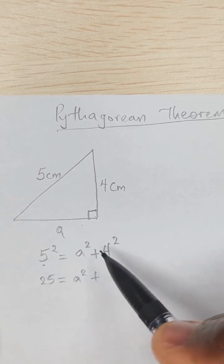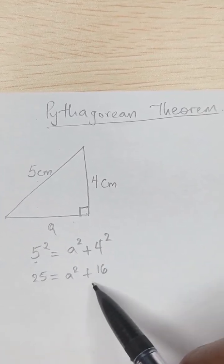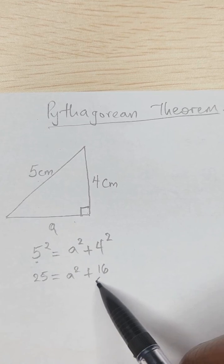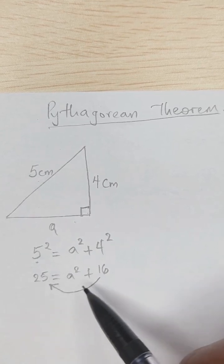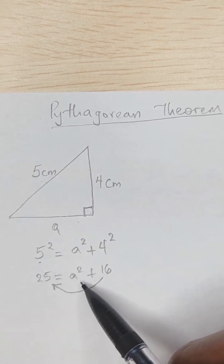4 squared is 16. We can move this over here, and then plus 16 becomes minus 16.